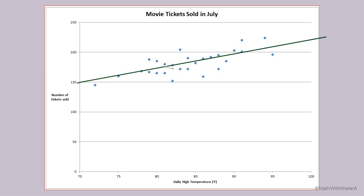To construct our linear equation, we need two main quantities. First, we need the starting amount, which on a graph is at the vertical intercept. For my summary line, the vertical intercept is at 150 movie tickets sold. Because I informally chose the summary line, a different person might choose a slightly different line with a different vertical intercept, and that would probably still be okay — there are many equations that give a good summary of the points in this scatter plot. My line this time happened to start at 150.